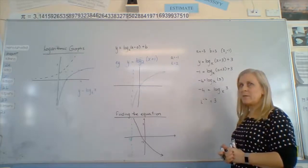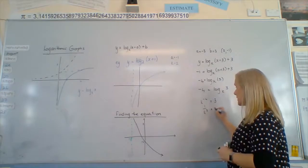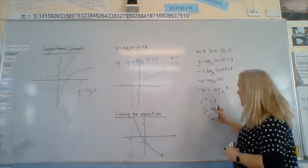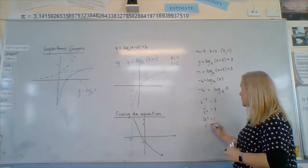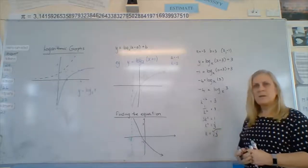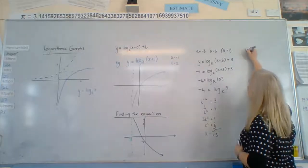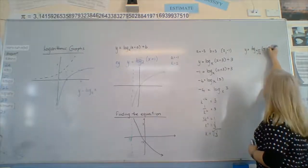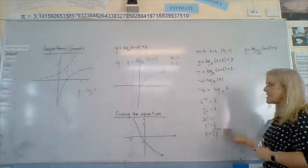k to the negative 4 — what does that mean? Remember, the negative means 1 over. So 1 over k to the 4 equals 3. Now if we multiply, we get 3k to the power of 4 equals 1, so k to the power of 4 equals 1 third. And what's the fourth root of a third? I have no idea, but I'm just going to leave it like that because that's exact. So we go back and put that in: y equals log base (fourth root of 1/3) of (x + 3) plus 3. You'd probably get something nicer — like k squared equals 9, giving k equals 3.